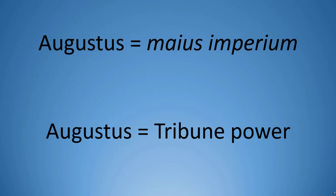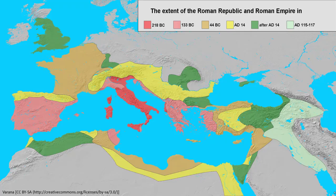Augustus did expand Roman control to new areas early in his reign, but disasters in Germany caused him to rethink his strategy. He began to believe that Rome was overextended and that a policy of defending what it already had, rather than trying to take more, was needed. Most other emperors would follow this pattern of consolidation, with a few exceptions.